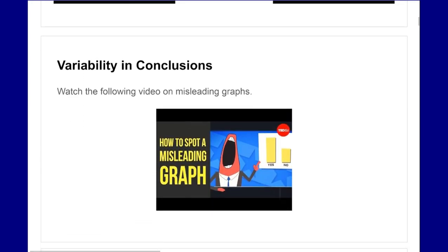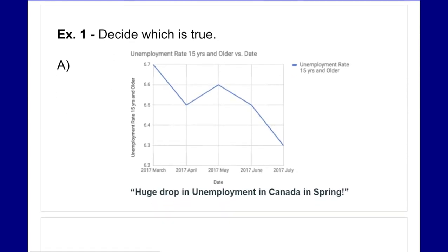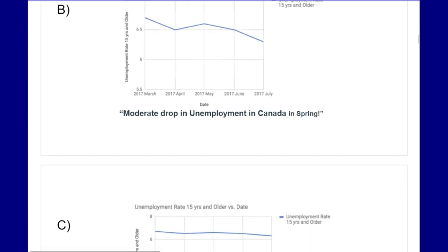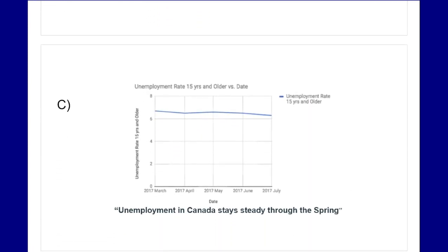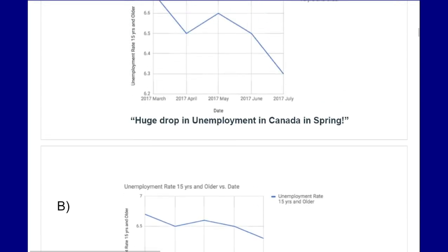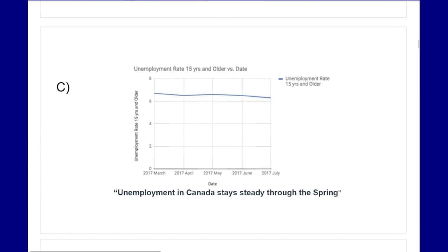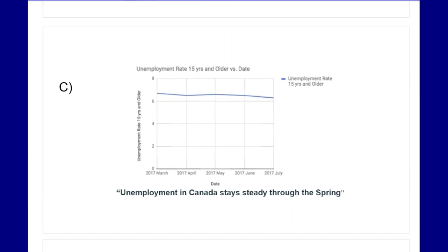From there, as a little warm-up, I want you to take a look at each graph and think about which statement is true. It's all going to be the same graph. Think about which statement is true: a huge drop in unemployment in Canada in spring, a moderate drop in unemployment in Canada in spring, or unemployment in Canada stays steady through the spring — three different options to look at.